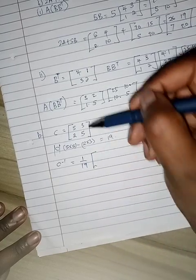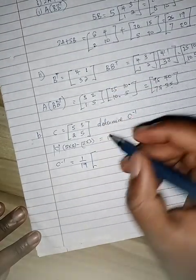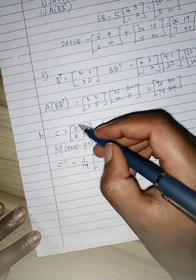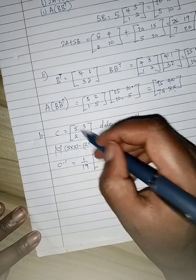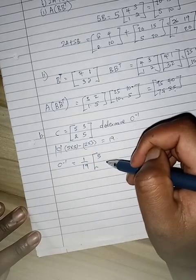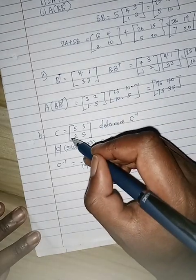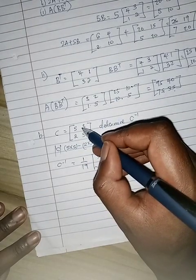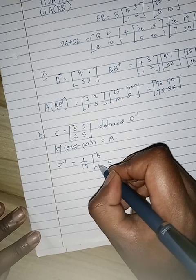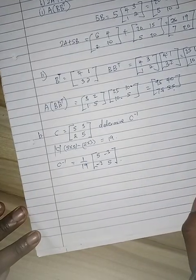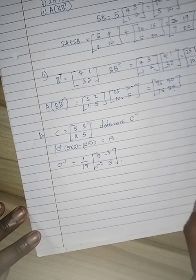So the inverse of that is basically 1 over 19, right? Then you interchange these two. So they are the same, so they just remain the same, 5 and 5 are just the same. Then you put a negative sign before these two. So this would be negative 2, negative 3. So basically that's the inverse.